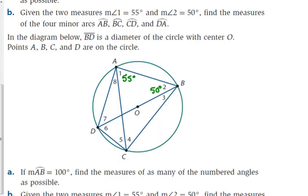So 55 degrees is the inscribed angle for arc BC. So that means arc BC is 110 degrees. Angle two is the inscribed angle for AD. So that makes AD 100 degrees.